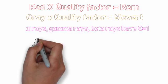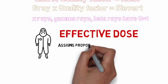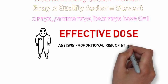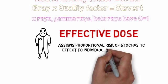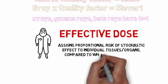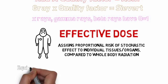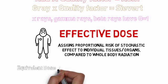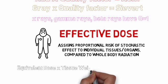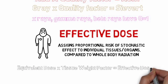Effective dose assigns proportional risk of stochastic effect to individual tissues or organs compared to whole body radiation. Equivalent dose multiplied by the tissue weight factor equals effective dose.